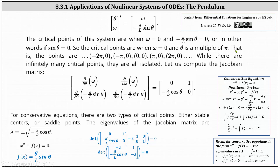We have an infinite number of critical points: negative two pi comma zero, negative pi comma zero, zero comma zero, pi comma zero, two pi comma zero, and so on. While there are infinitely many critical points, they are all isolated.